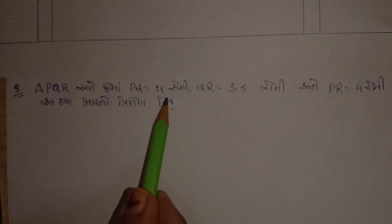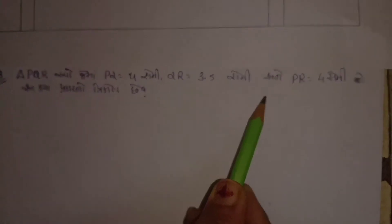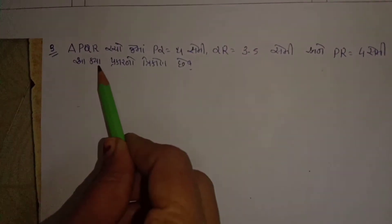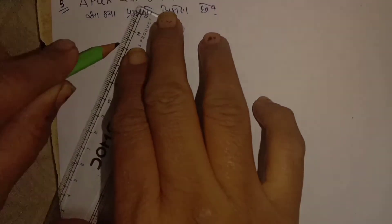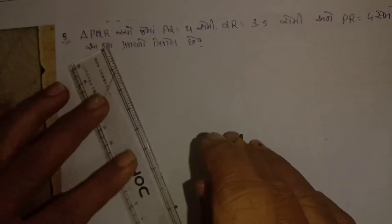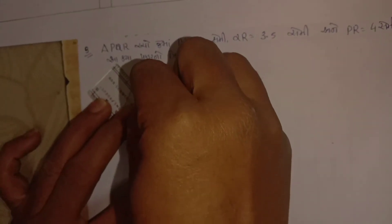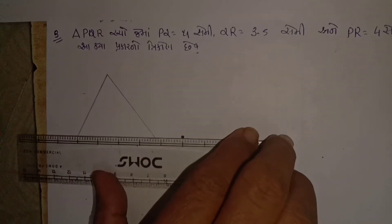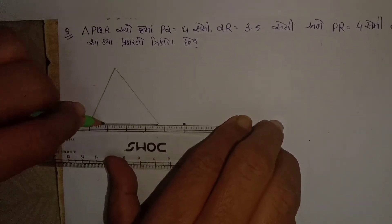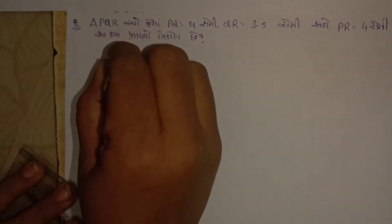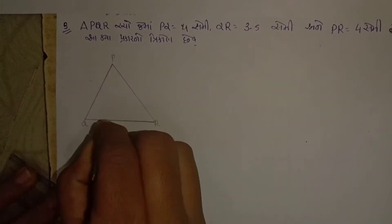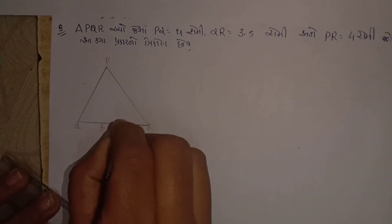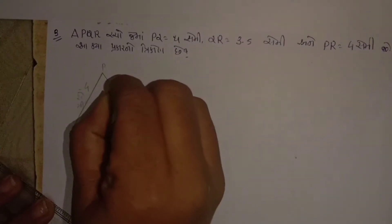આ પ્રશ્નમાં પૂછેલો છે કે આ ક્યા પ્રકારનો ત્રિકોણ છે. તો હવે આપણે સૌ પ્રથમ કાચી આકૃતિ ડ્રો કરીએ છીએ, જેમાં કોઈ પર્ફેક્ટ માપ લેવાની જરૂર નથી. આ QR નું માપ 3.5 સેમી છે, અને PQ અને PR નું માપ 4 સેમી આપેલું છે.